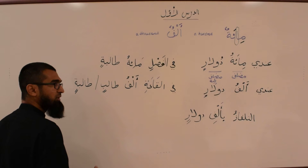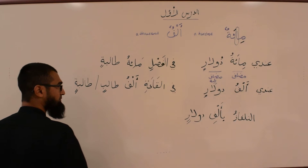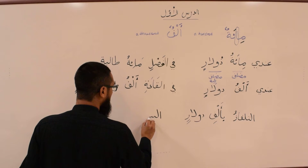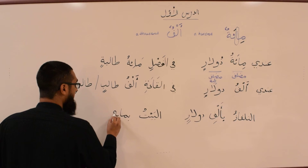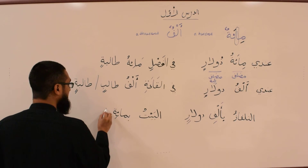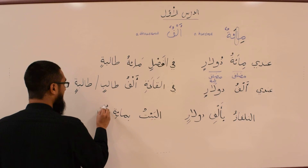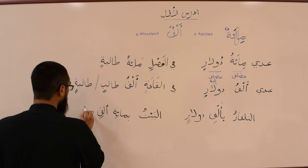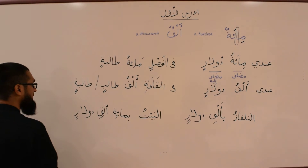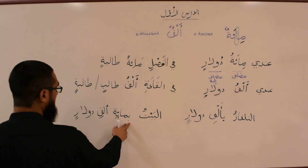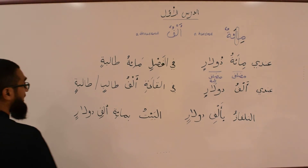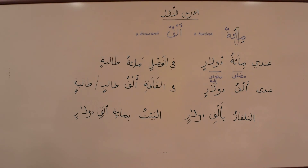Here comes a compound construction: Al-Baytu bi-Mi'ati Alfi Dularin — the house costs a hundred thousand dollars. Bi-Mi'ati Alfi Dularin.